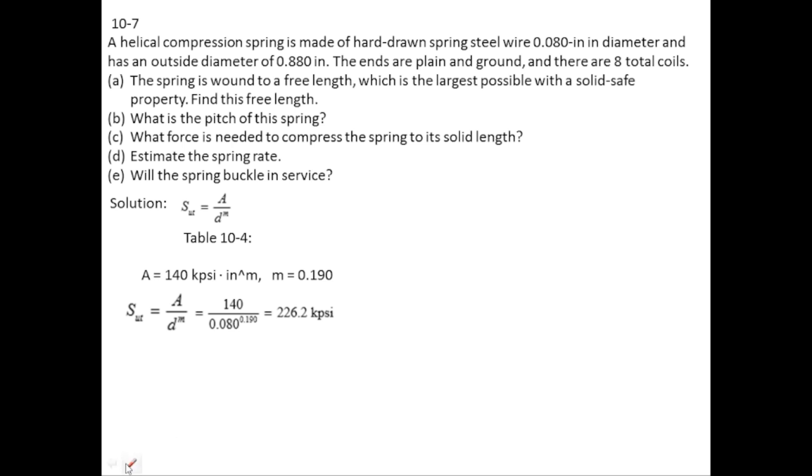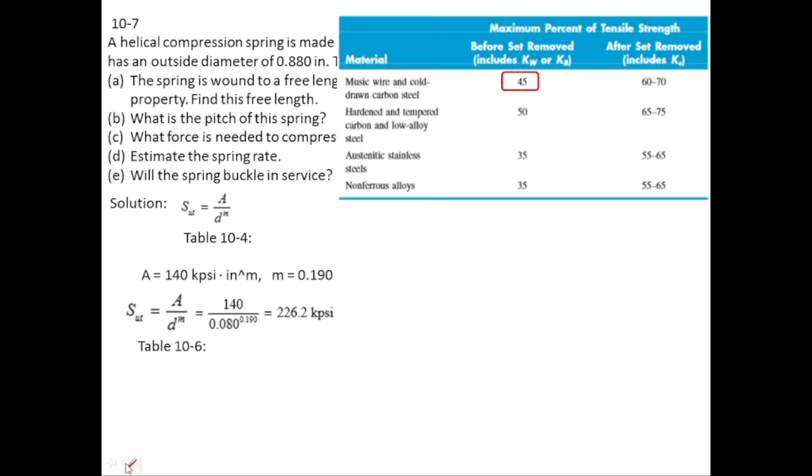As torsional yield strength is equal to some percentage of SUT, that percentage is taken from table 10.6 which is 45 percent for music wire and cold drawn carbon steel.